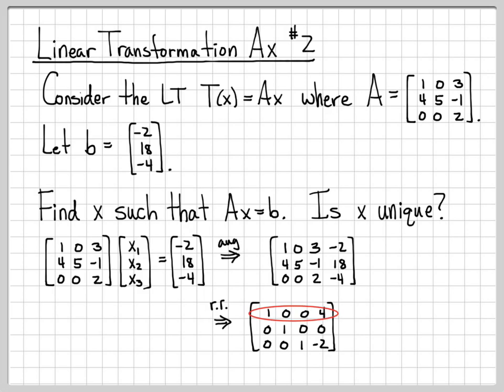This first row says that x1 is equal to 4. The second row says that x2 is equal to 0. And the third row says that x3 is equal to negative 2. So we've found that the vector x is the vector with entries 4, 0, and negative 2. When A operates on this vector, it results in the vector b. So we've found an x such that Ax equals b. That's what we were asked to do.